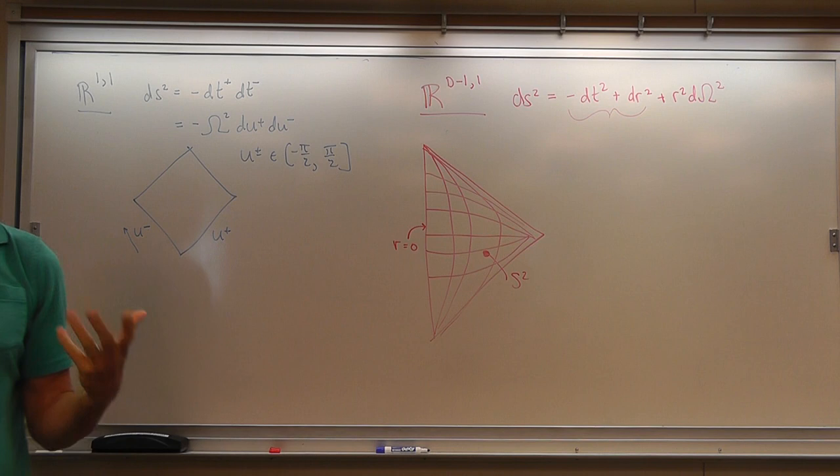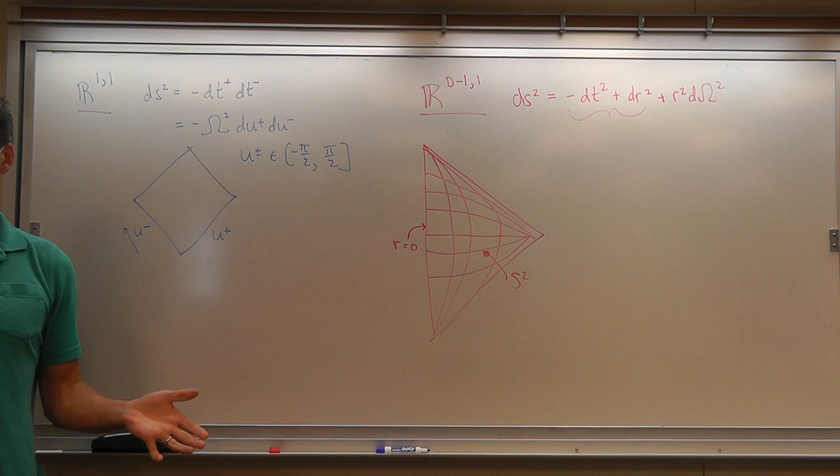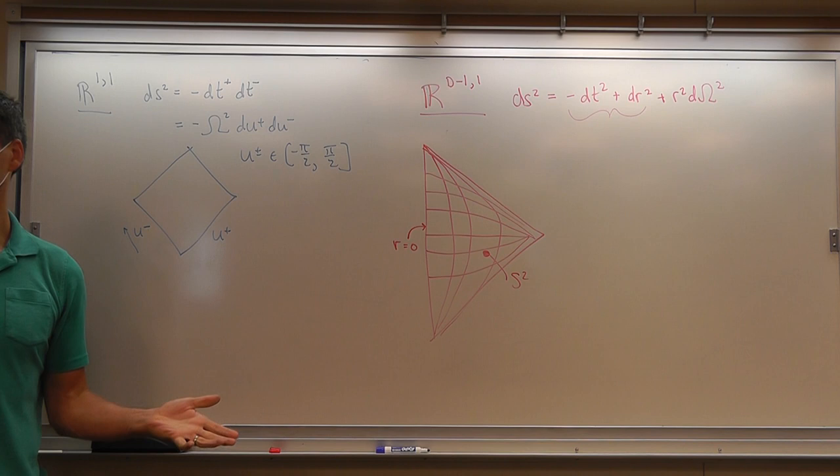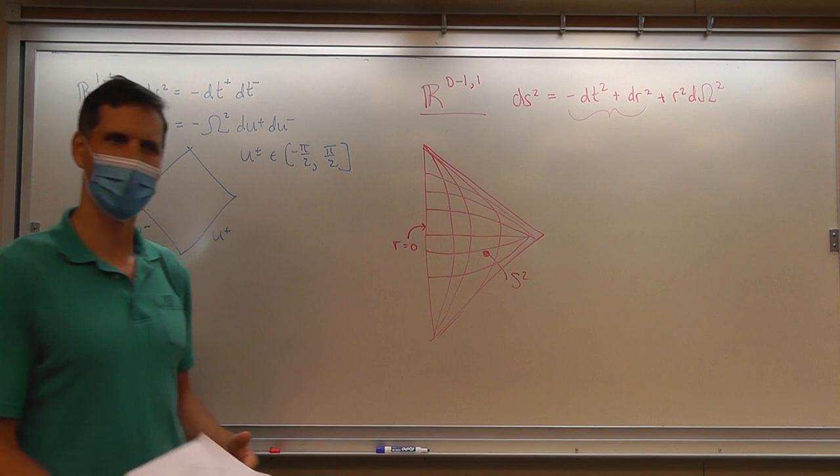But it can also be very confusing if you're trying to think about something that's not spherically symmetric. For example, where is Rindler space on this diagram? Well, nowhere, kind of, because Rindler space is not spherically symmetric.